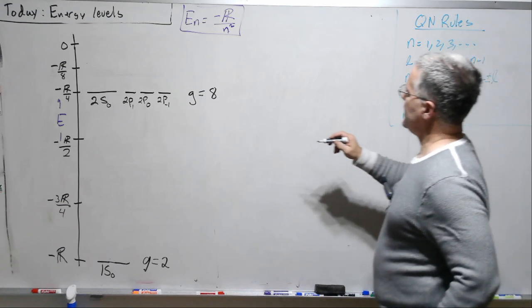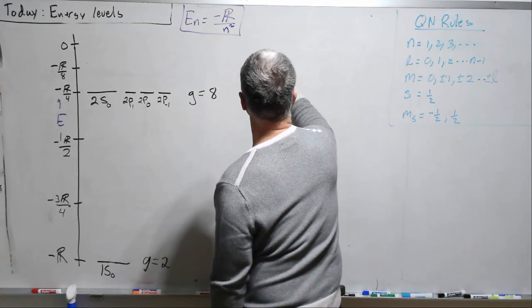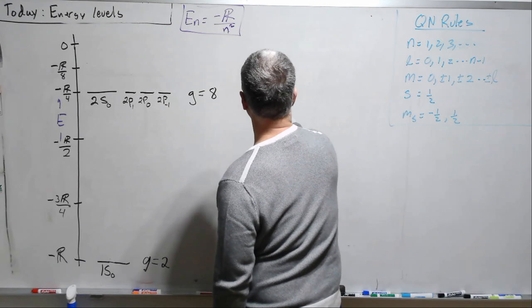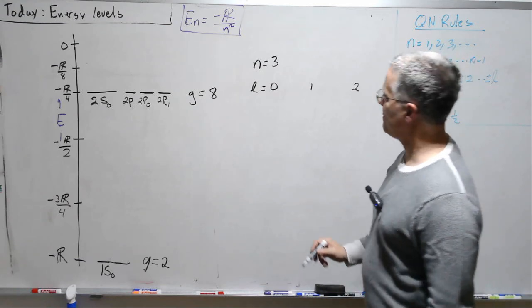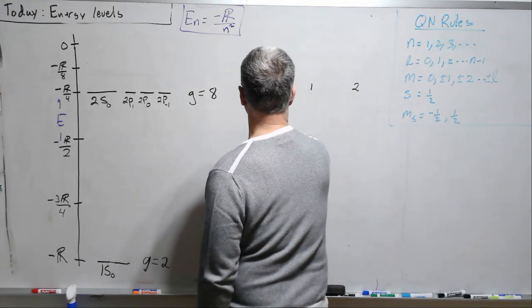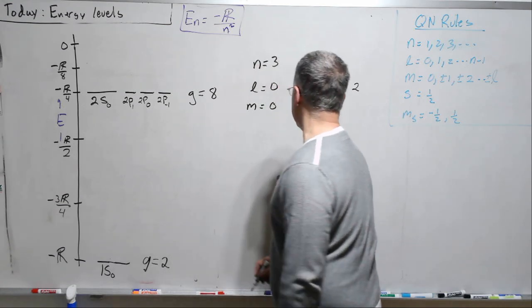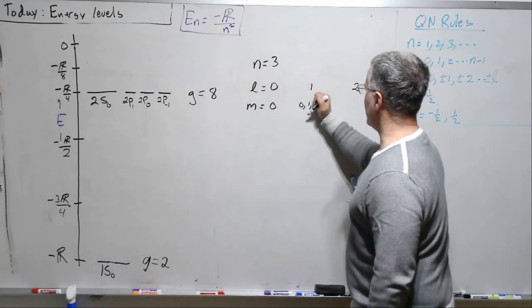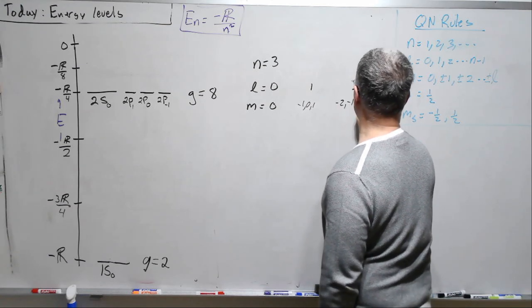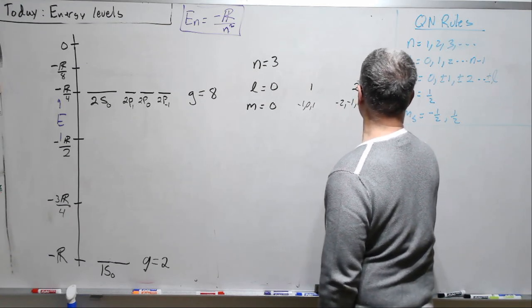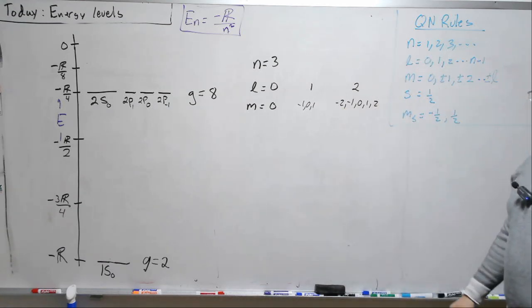Well, let's do n equals 3. Then L equals 0, 1, or 2. m here equals 0, 0, 1, minus 1. Let me write it like this. Minus 1, 0, 1. This will be minus 2, minus 1, 0, 1, and 2, because L is 2, and we can go all these values.